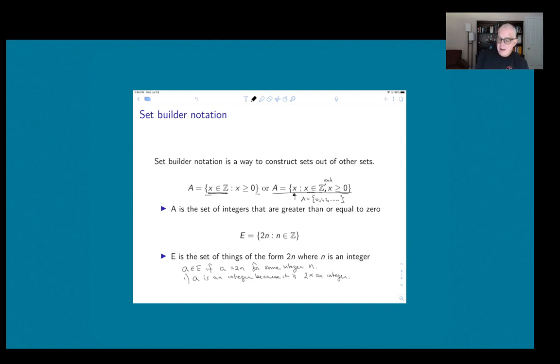But not every integer is two times an integer. So for example, one is not in E because one is not equal to two times an integer for some integer.